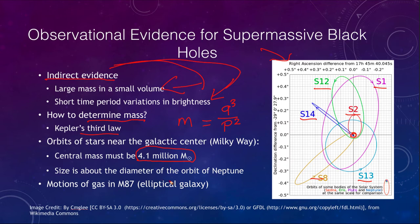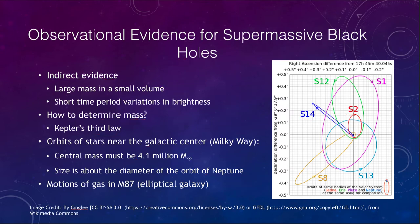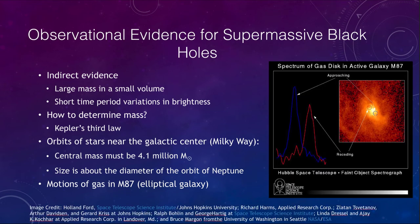The size of that central object is about the diameter of the orbit of Neptune — about 60 astronomical units, roughly the size of our solar system. That is one way we can use to determine the masses of these black holes and get observational evidence that they exist. Another way is to look at the motions at the center of a galaxy.